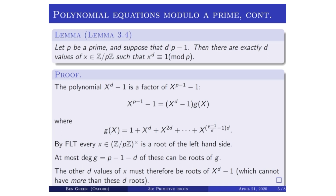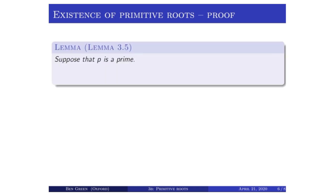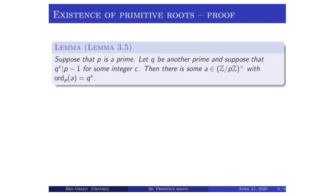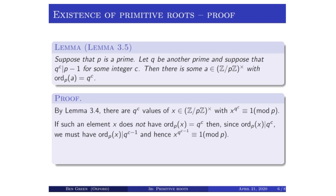This lemma was very specific to z mod p z — we really used Fermat's little theorem. Now we've assembled those ingredients about polynomials, we'll turn to the actual proof of the existence of primitive roots. We need one more lemma: let p be a prime, let q be another prime, and suppose q to the c divides p minus one for some integer c. The conclusion is that there's an element a in z mod p z star whose order is exactly q to the power c.